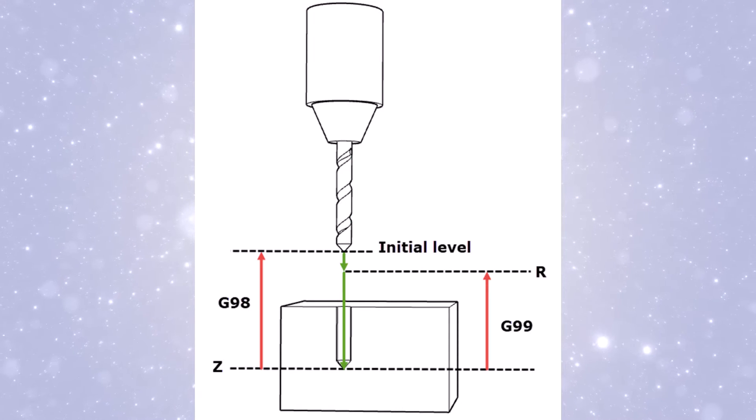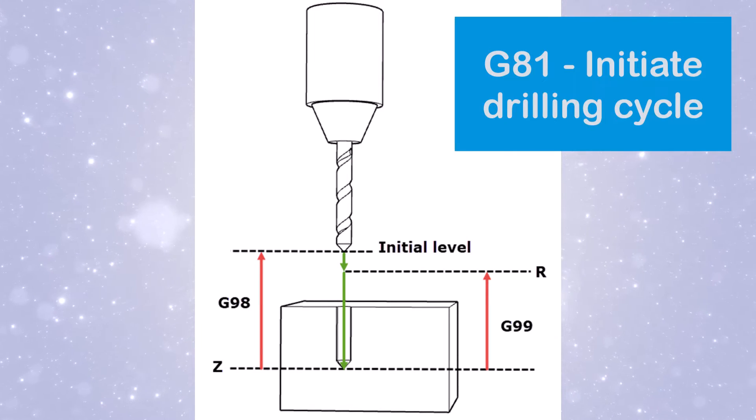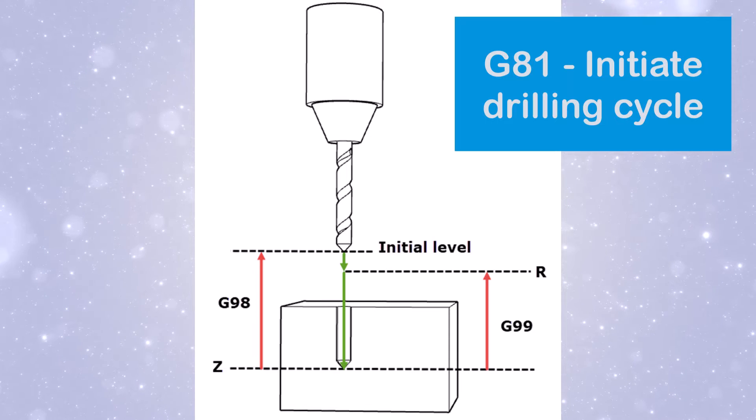On the other hand, G81 is a G-code that initiates a basic drilling cycle. When G81 is used, you define the start point, the depth of the hole, and the retraction point.